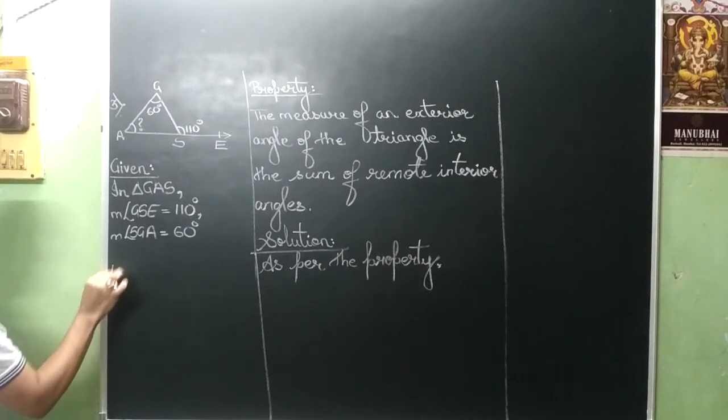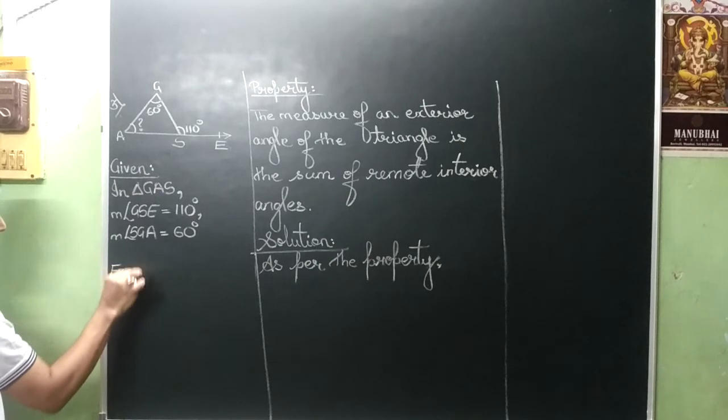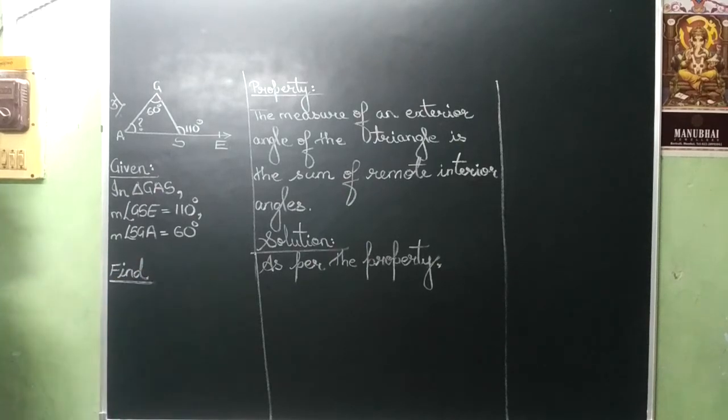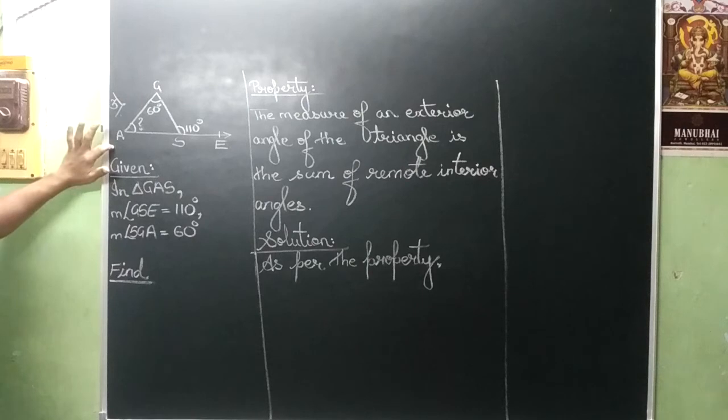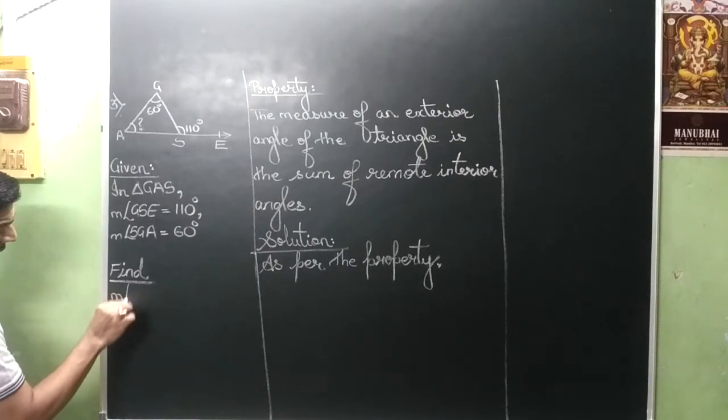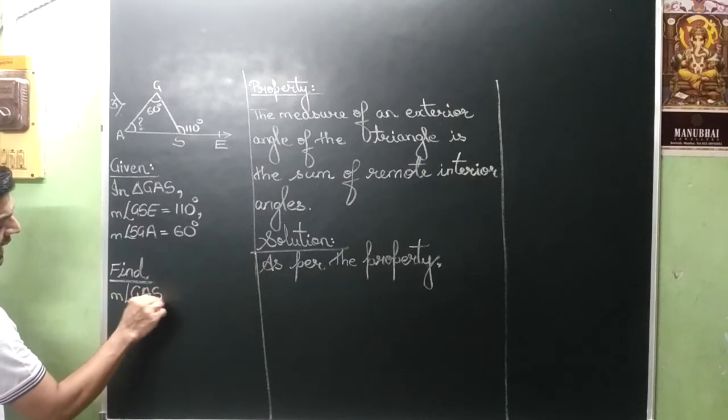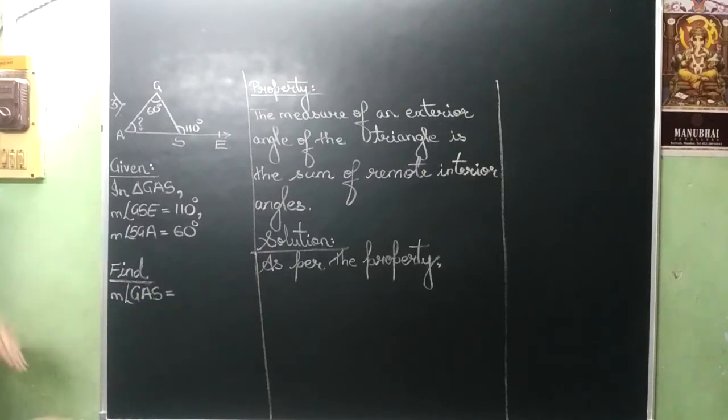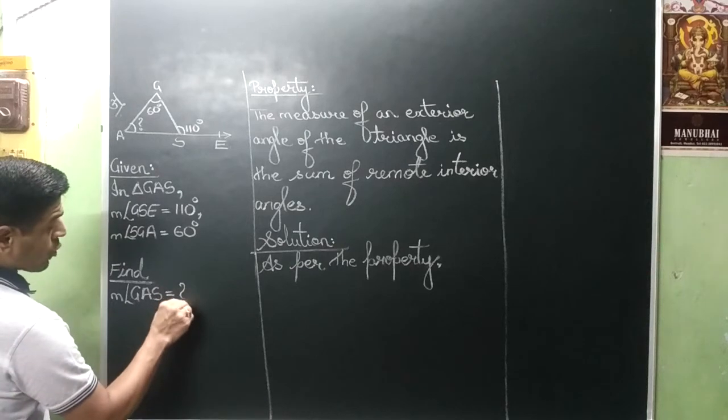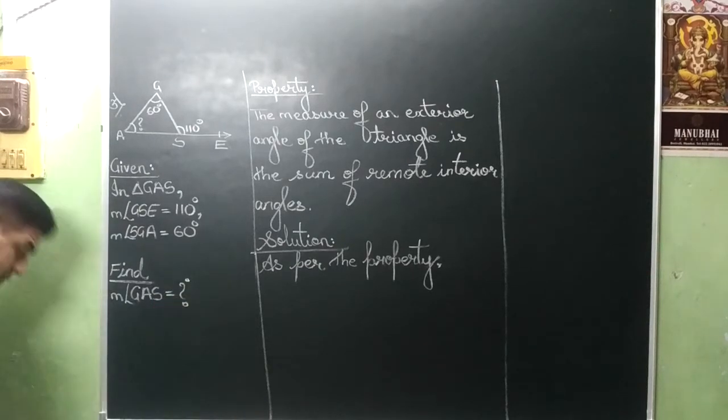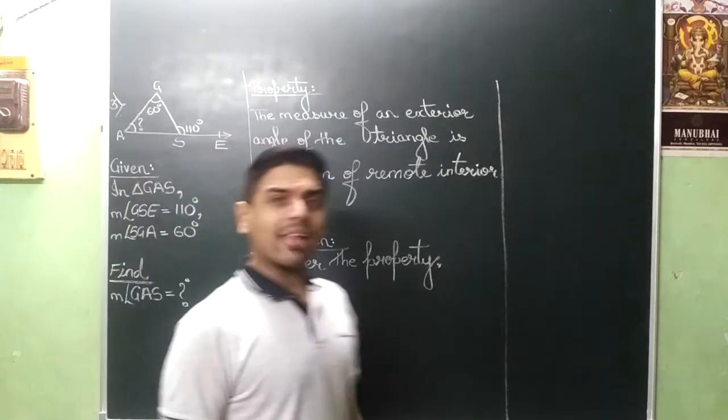Leave a line, fine. So keeping A in between, you will write the name, measure angle GAS is equal to question mark degrees. And then you have to use your property.